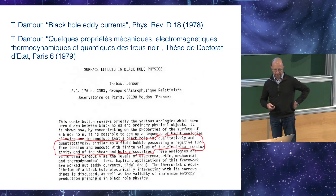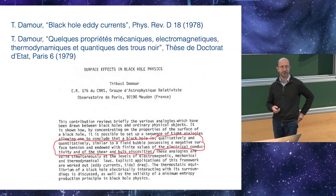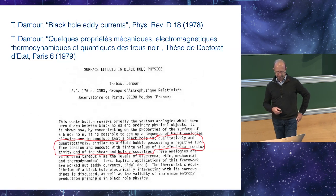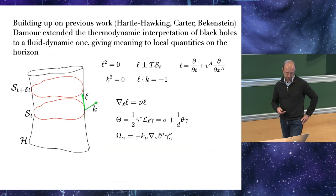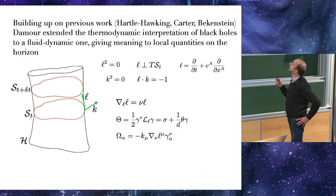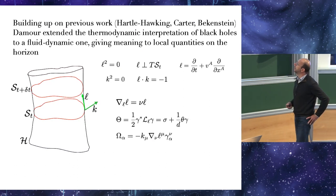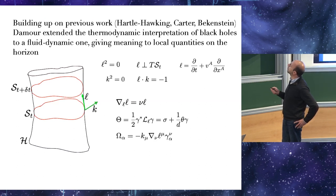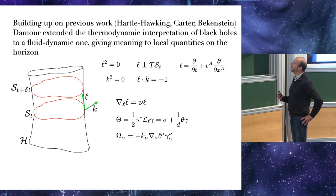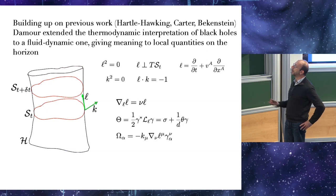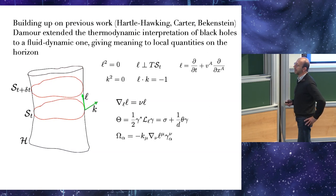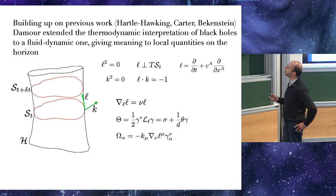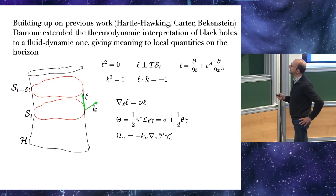And in the 70s, as we all know, people have been starting to understand black holes as thermodynamic objects with entropy and temperature. Building from some previous work that had mostly to do with the global properties, Damour was the first, I think, to extend this interpretation of black holes to a fluid dynamic one, giving meaning to local quantities on the horizon.